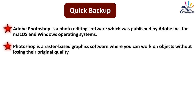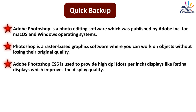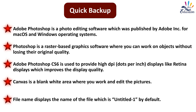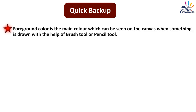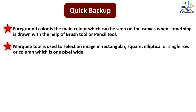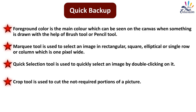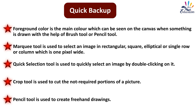Quick recap: Adobe Photoshop is a photo editing software published by Adobe Inc. for Mac OS and Windows. It is a raster-based graphics software where you can work on objects without losing their original quality. Canvas is the blank white area where you work and edit pictures. Foreground color is the main color on the canvas when drawn with the Brush or Pencil tool. Mark tool selects images in rectangular, square, elliptical, or single row/column form. Quick Selection tool selects by double-clicking, and Crop tool cuts unwanted portions. Pencil tool is used to create freehand drawings.